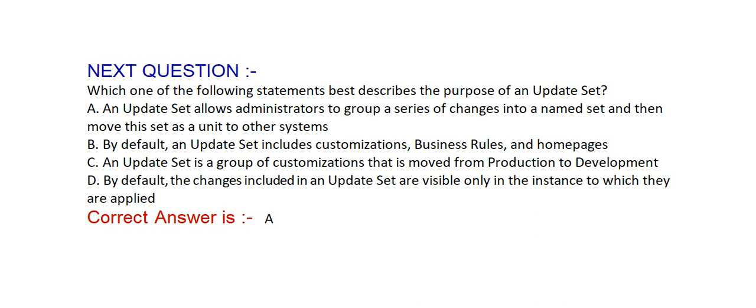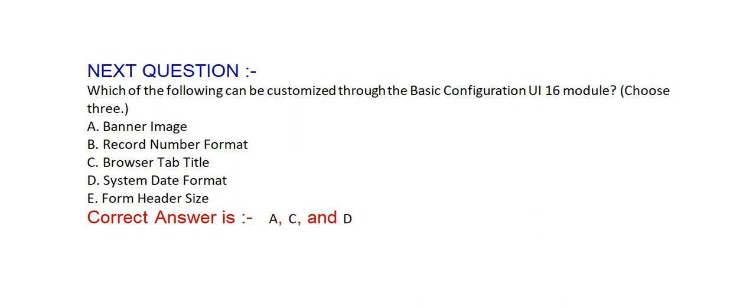Option C: an update set is a group of customizations that is moved from production to development. Option D: by default, the changes included in an update set are visible only in the instance to which they are applied. Correct answer is option A — an update set allows an administrator to group a series of changes into a named set and then move this set as a unit to other systems.